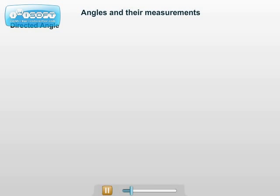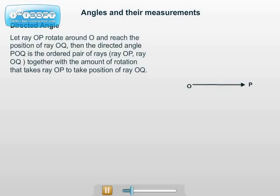Directed angle. Definition: Let ray OP rotate around O and reach the position of ray OQ. Then the directed angle POQ is the ordered pair of rays (ray OP, ray OQ) together with the amount of rotation ray OP needs to take the position of ray OQ.